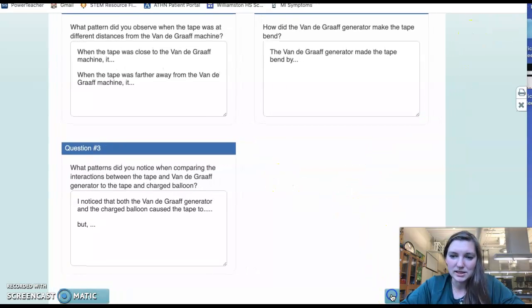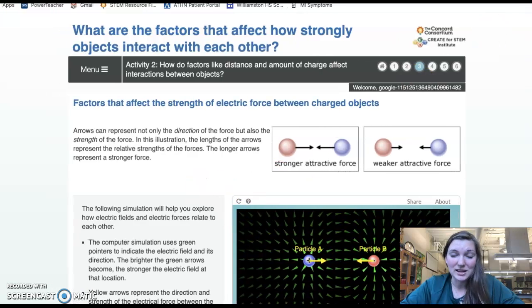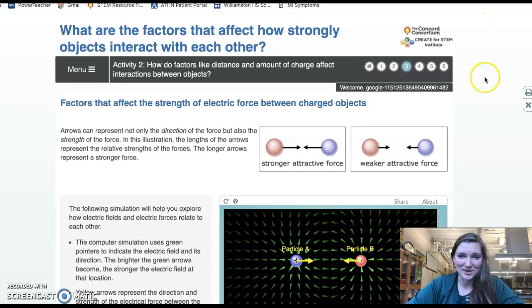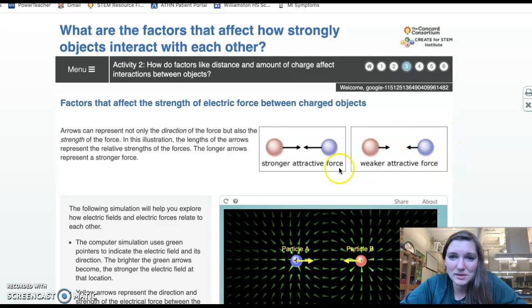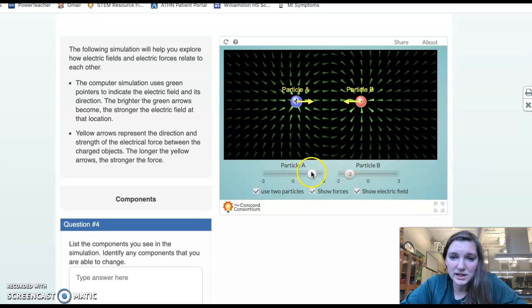Now, let's go on to the next page. Let me scooch this over so I can click the button. All right, so now we're looking at the factors that affect the strength of electric force between charged objects. So we have these components of this simulation here. We have two charged particles, and we have these arrows showing force. So longer arrows here mean a stronger attractive force. Shorter arrows mean a weaker attractive force.